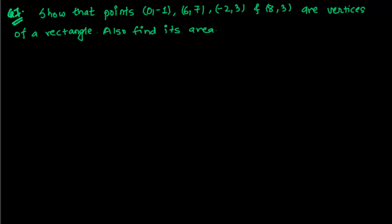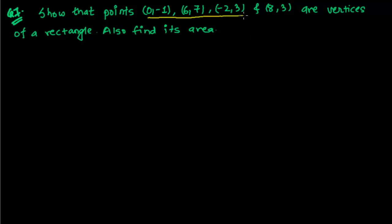Hi friends, here is another problem of coordinate geometry related to the distance formula. The question says to show that the points (0, -1), (6, 7), (-2, 3), and (8, 3) are the vertices of a rectangle, and also find its area. First, we have to find out whether these coordinates are the coordinates of a rectangle or not.